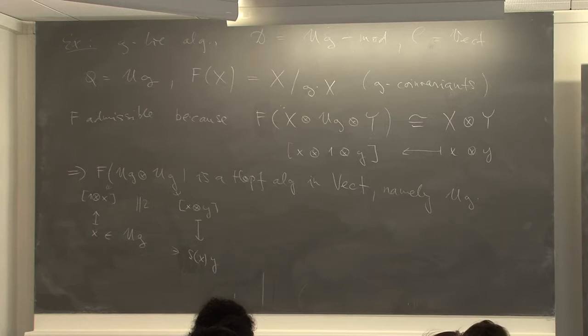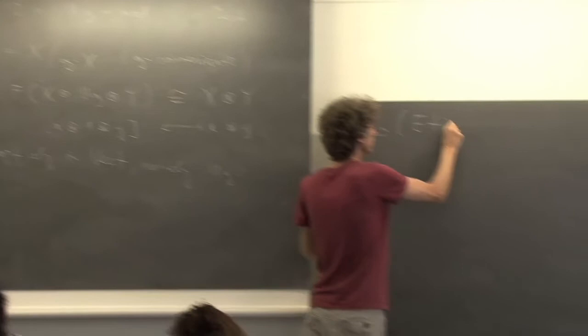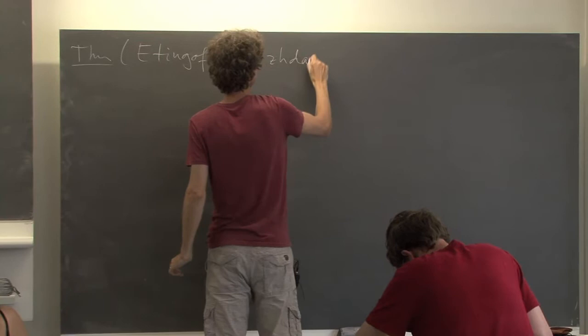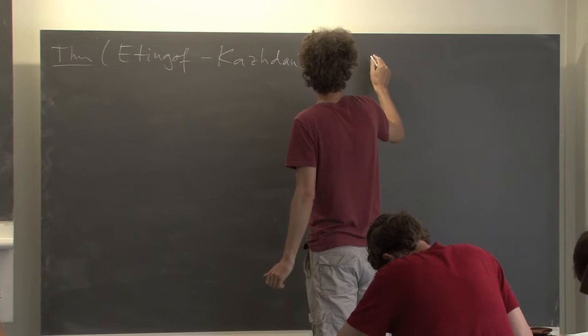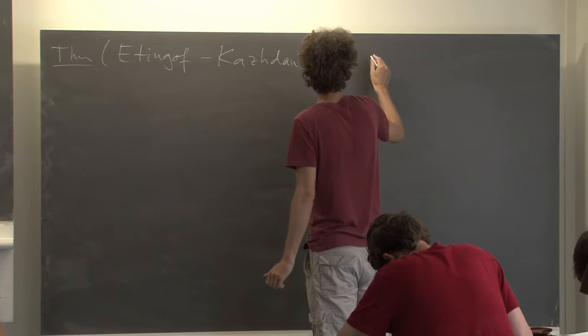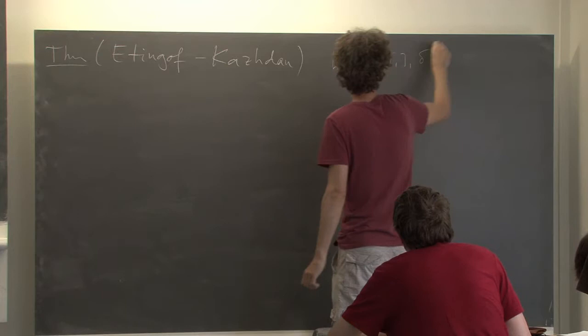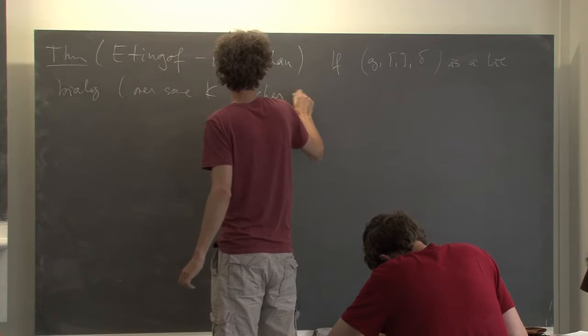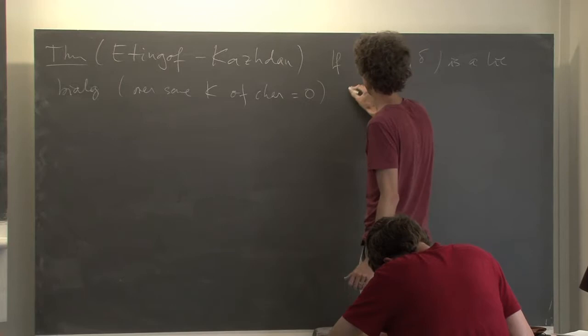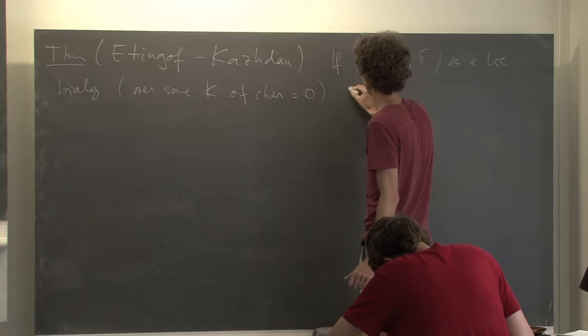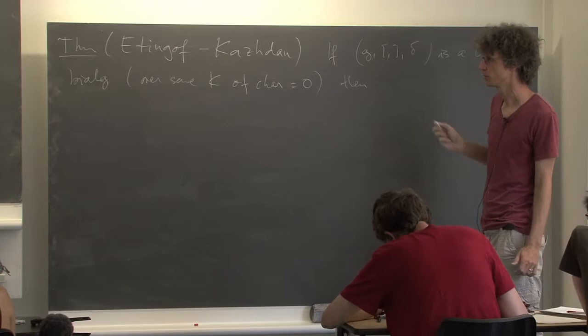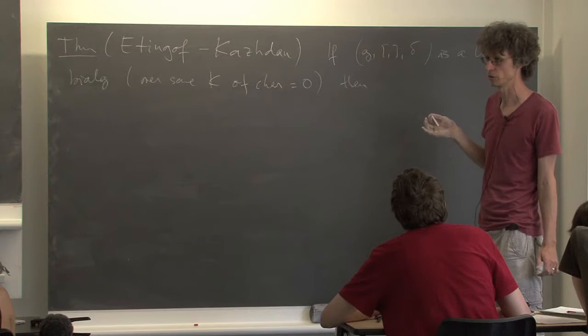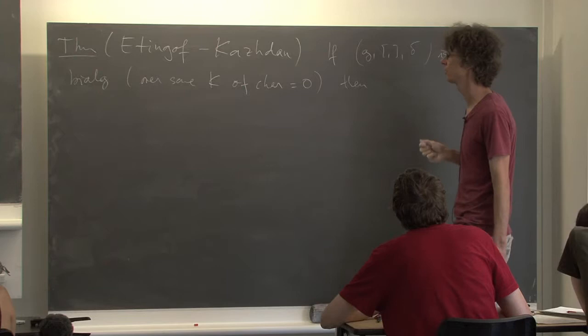So it's the theorem of Etingof-Kazhdan, which says roughly speaking one can quantize Lie bialgebras. Namely: if (G, bracket, co-bracket) is a Lie bialgebra over some field K of characteristic zero, then one can deform the Hopf algebra UG in the direction given by delta. So there exists a Hopf algebra structure on UG in the category Vect_{H-bar}.